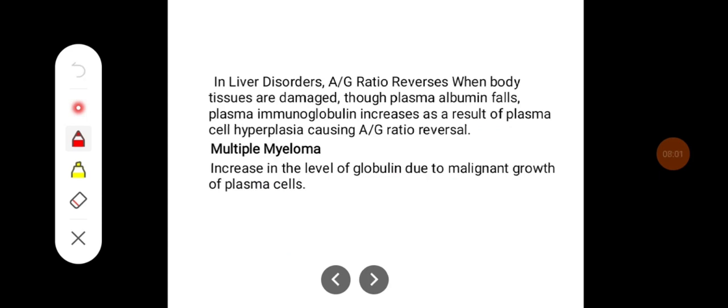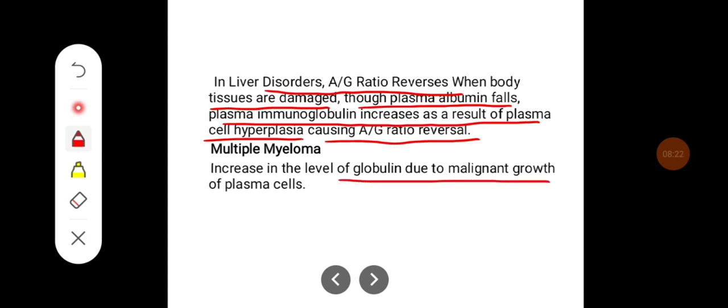In liver disorders, A/G ratio reverses. When body tissues are damaged, plasma albumin falls while plasma immunoglobulin increases as a result of plasma cell hyperplasia, causing A/G ratio reversal. Multiple myeloma shows an increase in the levels of globulin due to malignant growth of plasma cells.